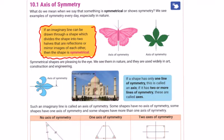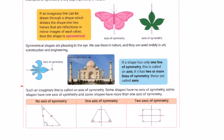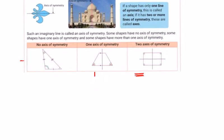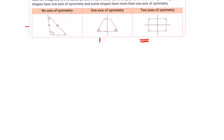Symmetry is amazing in nature — butterflies, leaves, buildings, aircraft. If a shape has only one line of symmetry it is called an axis; if it has two or more these are called axes. Some shapes have no axis of symmetry, some have one, and some have more than one — we've already seen examples of all of these.